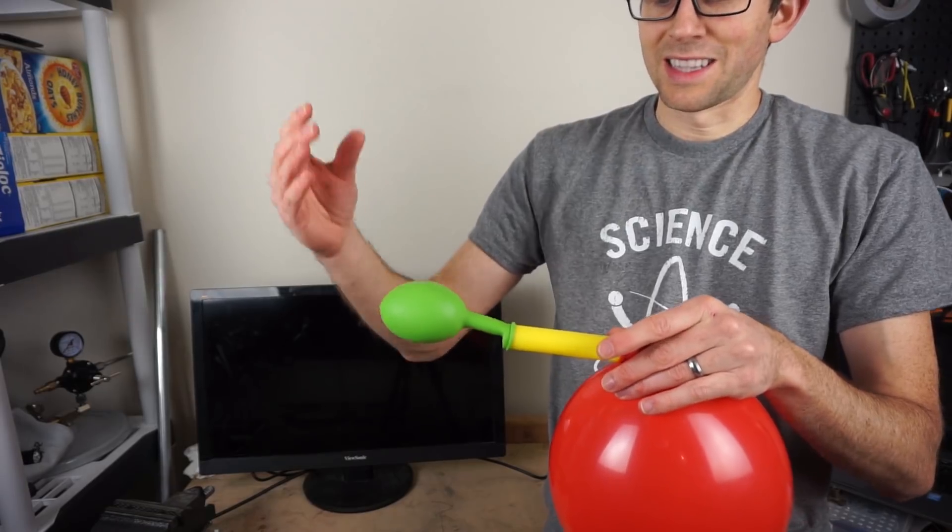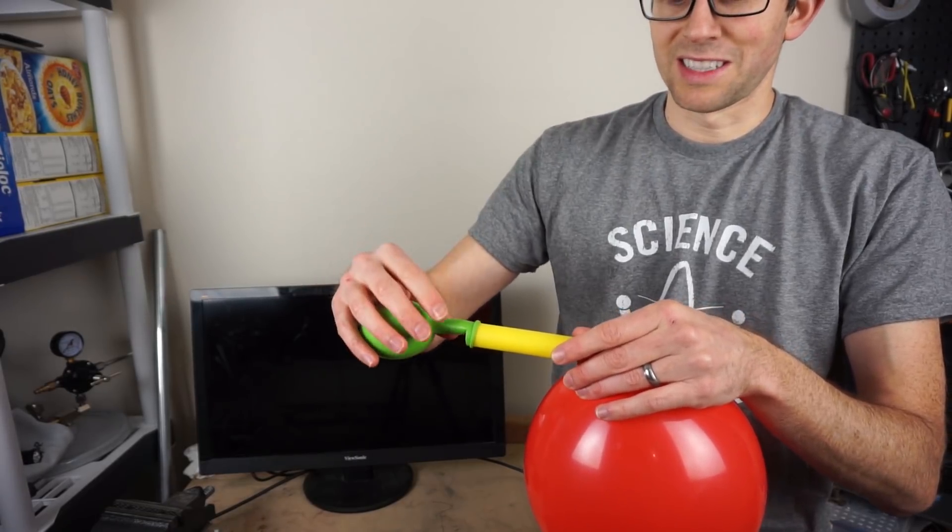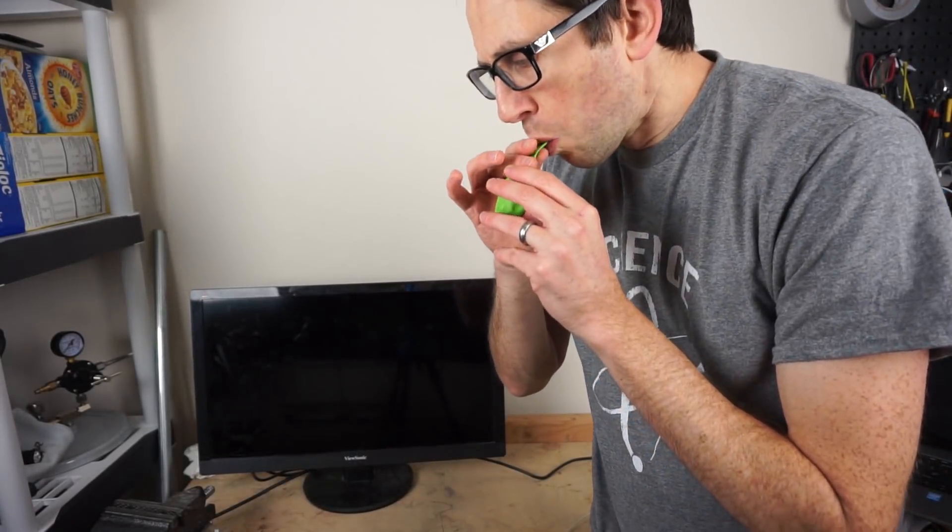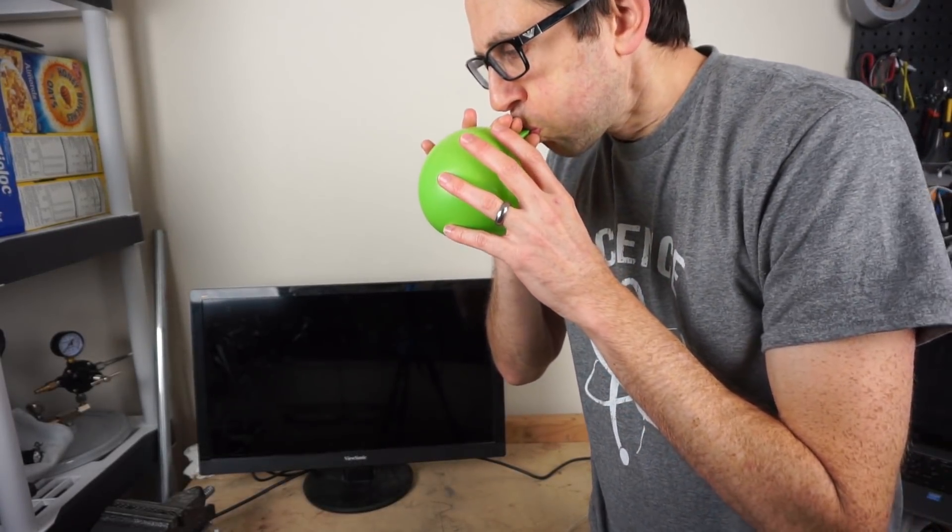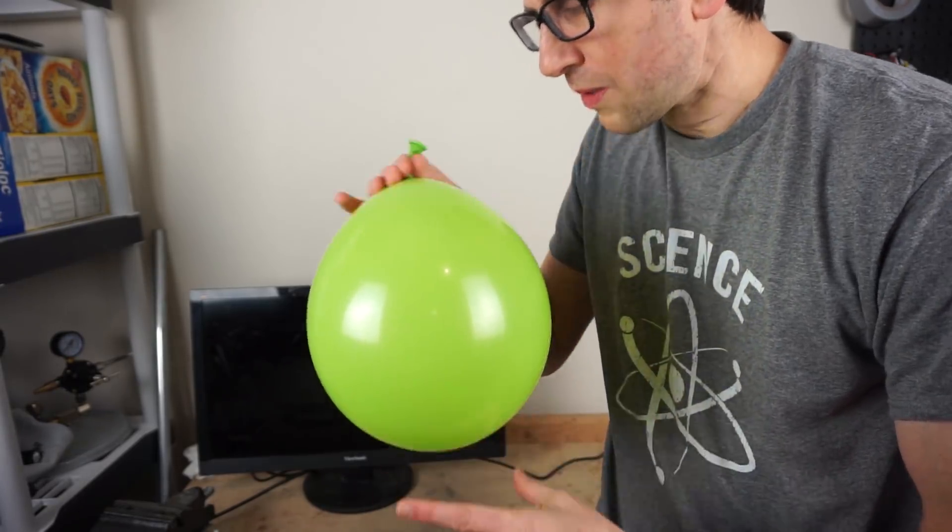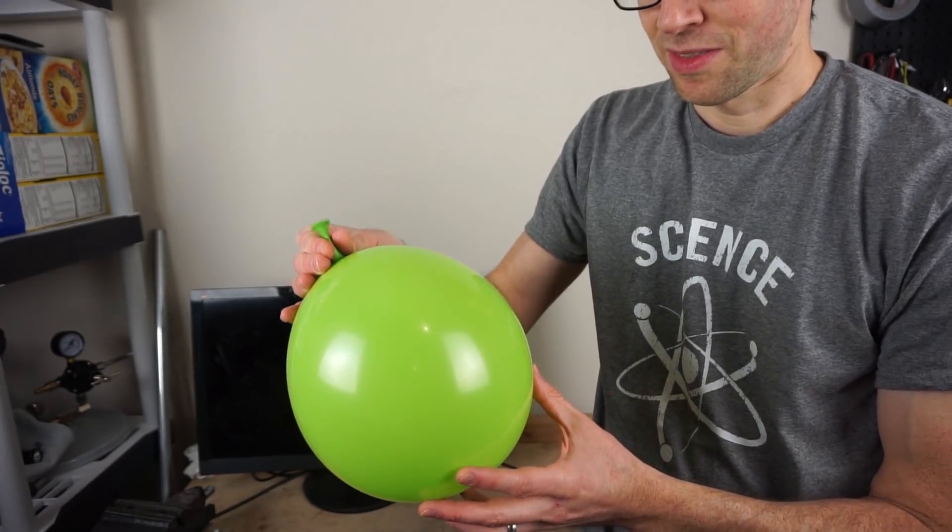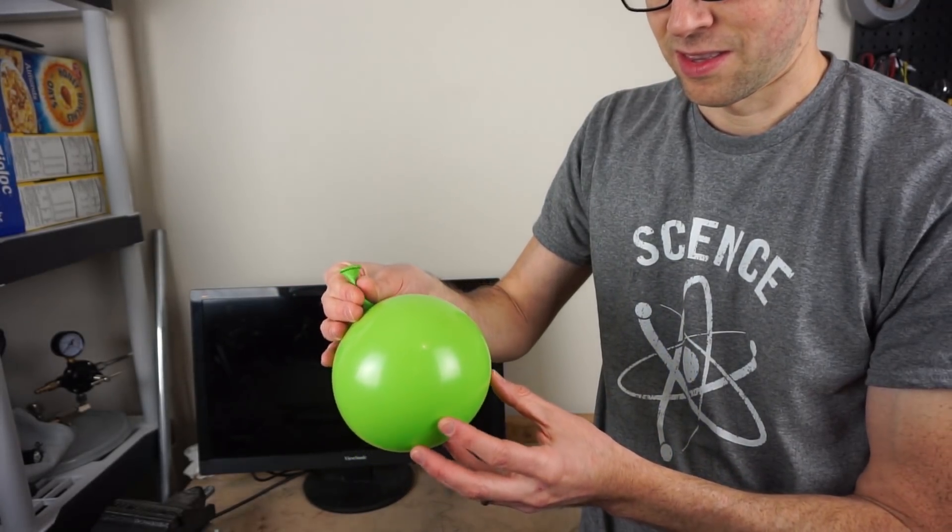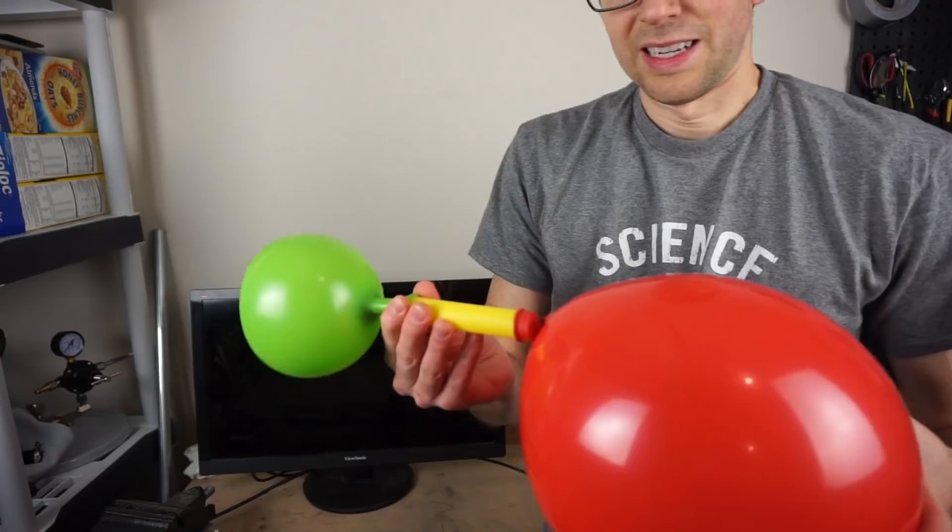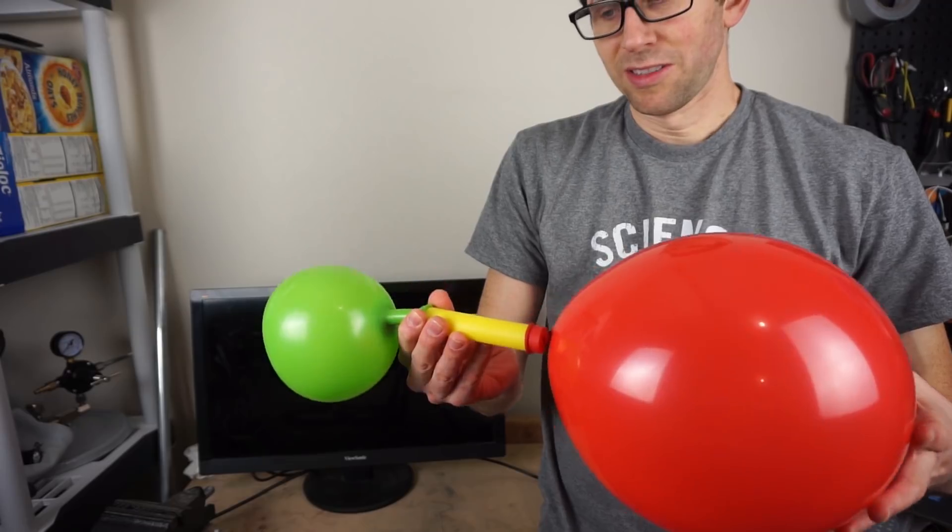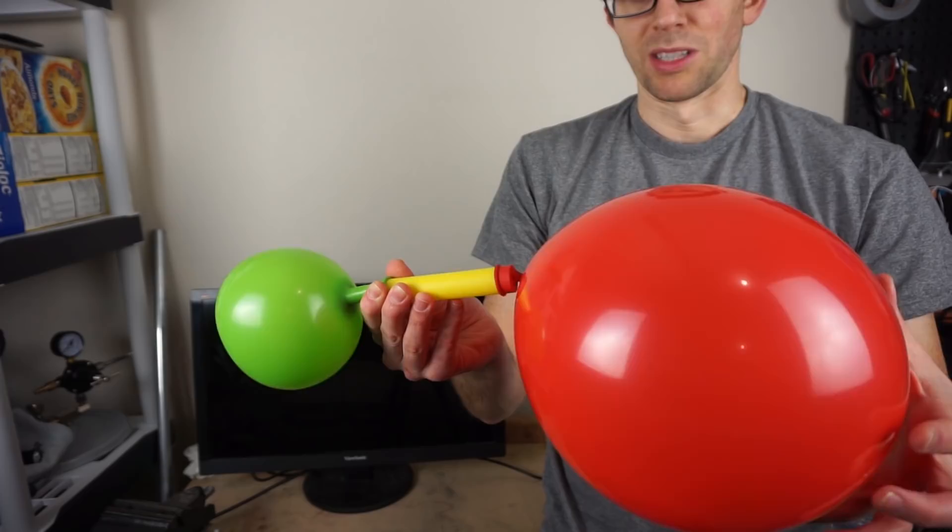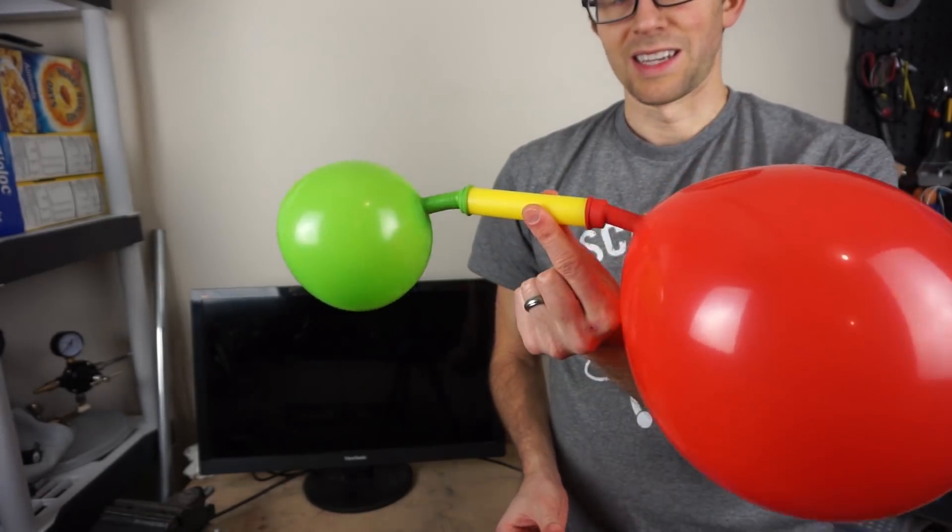But on the other hand, if the person says that they think the green balloon will decrease in size, then all you do is blow up the green balloon. And then let out the air until it gets to the same size as before. Now, when you release the red balloon, we know that the pressure in here is low, about the same pressure as the big red balloon here. And nothing happens.